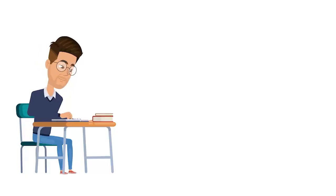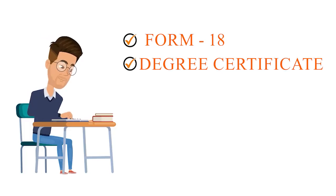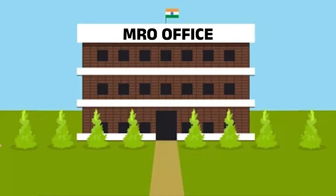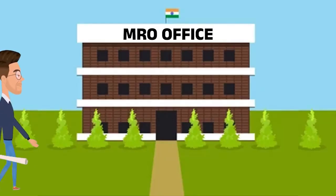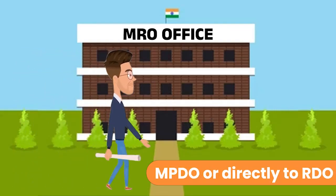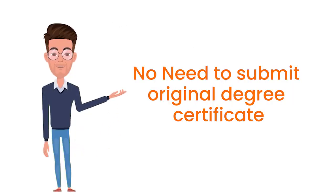You can fill Form 18 and submit the Degree Certificate xerox copy along with your documents at your area's MRO, MPDO, or RDO office. You can also submit at the Municipality or Corporation zone office, or to the Assistant Electoral Registration Officer.